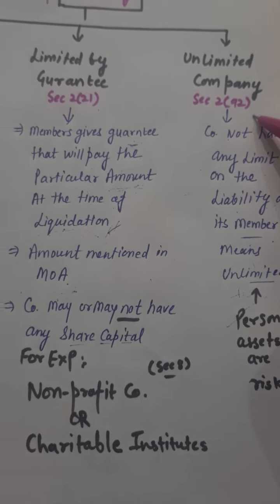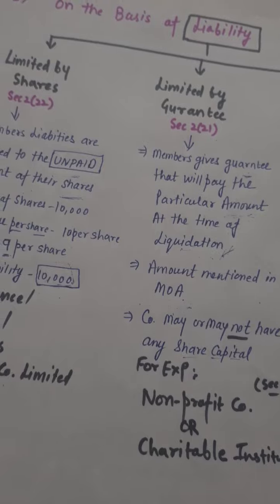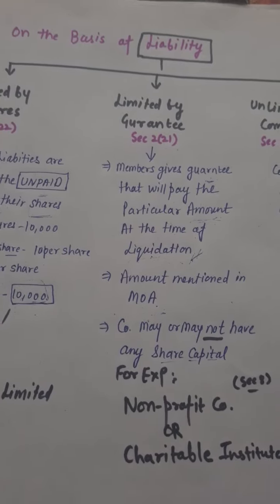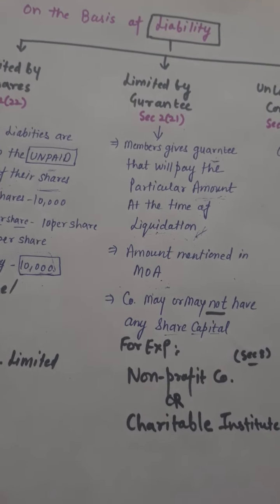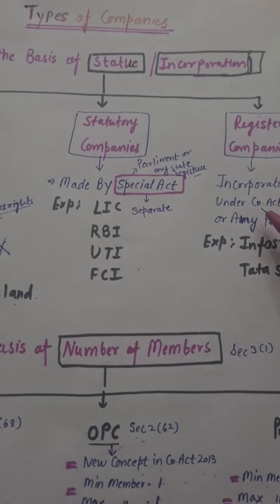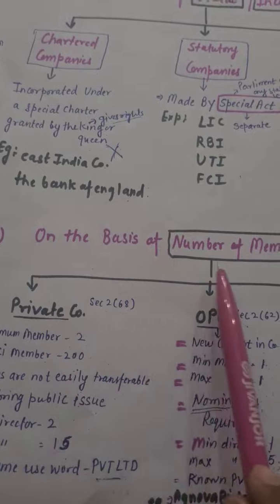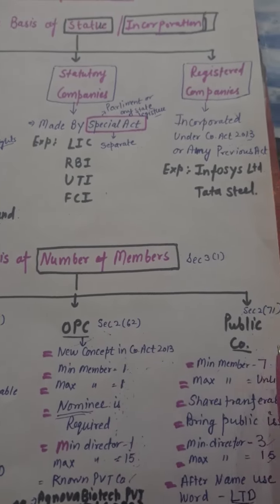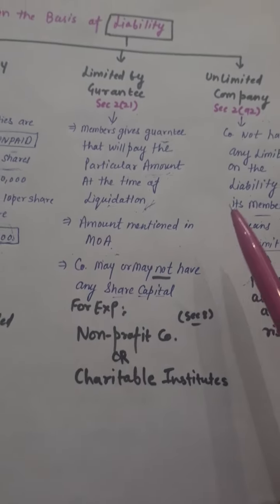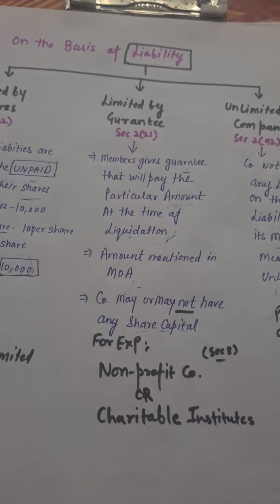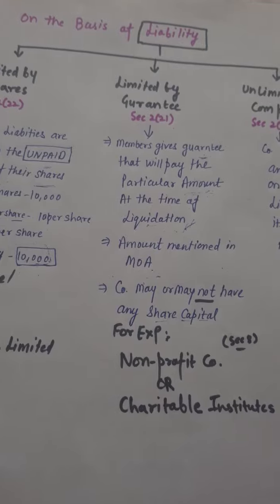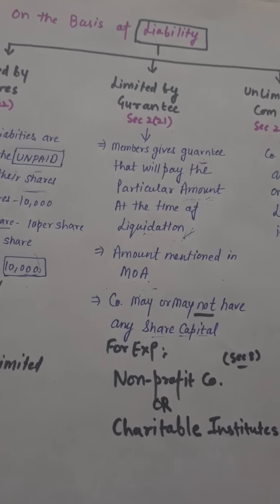Today we have studied types of companies on the basis of statutes — chartered, statutory, and registered company. On the basis of number of members — private company, OPC, and public company. On the basis of liability — limited by shares, limited by guarantee, and unlimited companies. Thank you for watching. If you like my video, share and subscribe. Thank you. Bye.